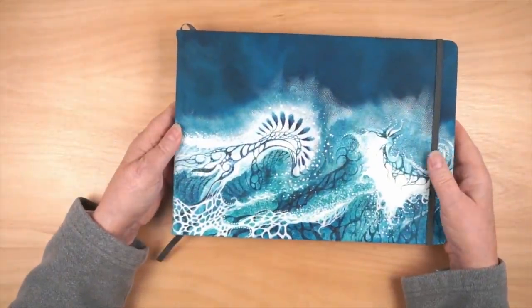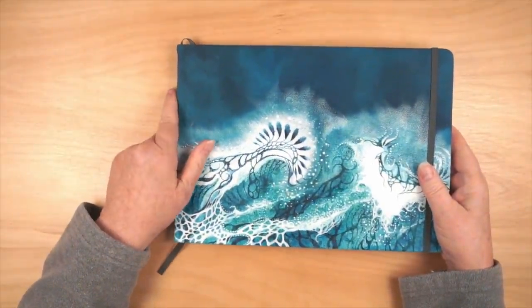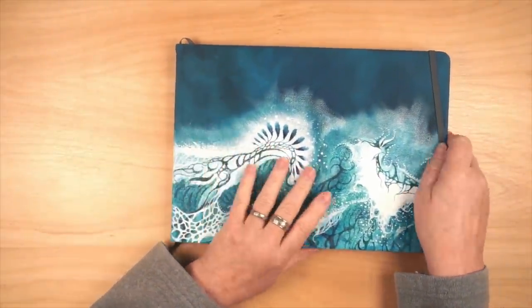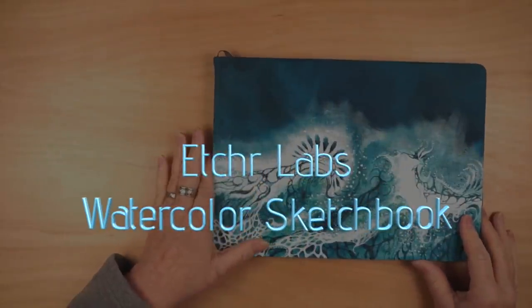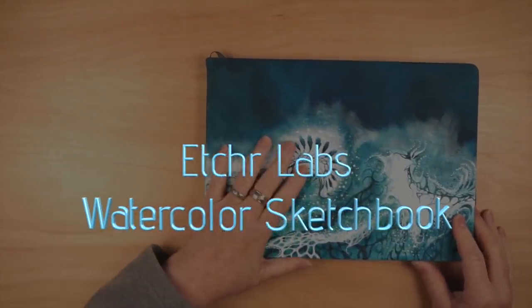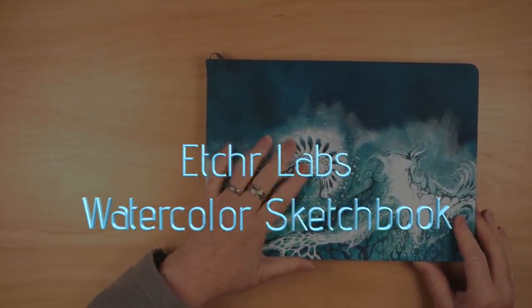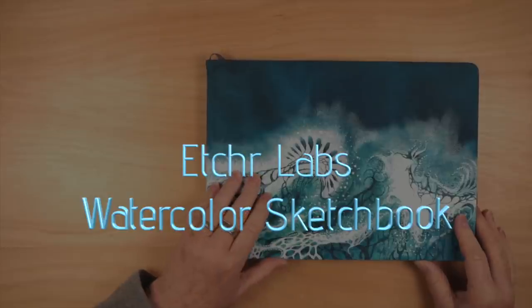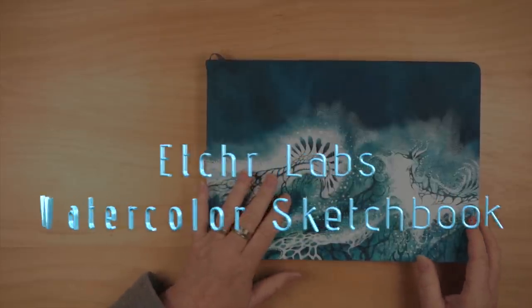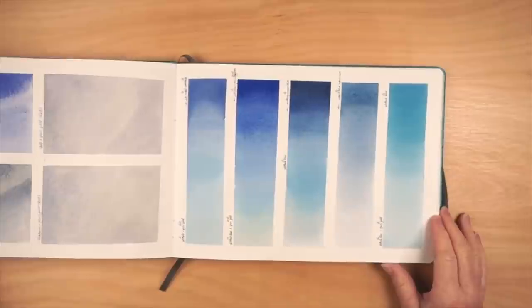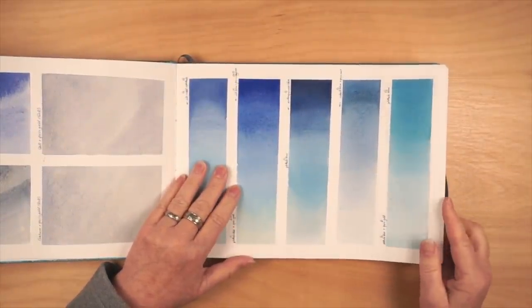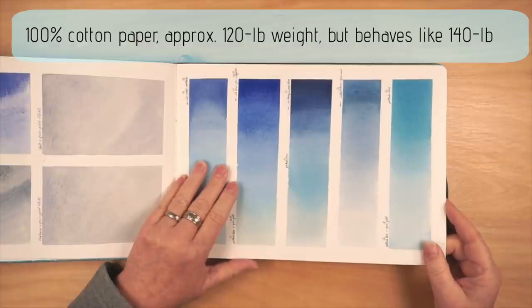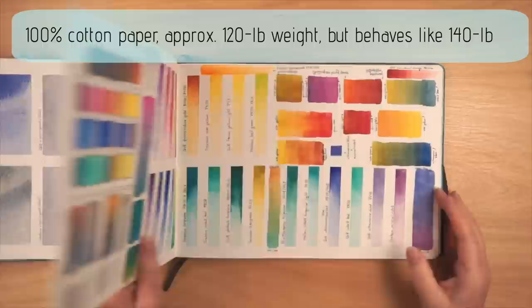Another possibility if you want a paper that is going to take a wash a little more like your studio paper is the Etcher Labs watercolor sketchbook. One of the fun things about this sketchbook series is that you can paint the covers with acrylic and kind of personalize them and make them your own. This paper takes watercolor very much like a regular professional-grade watercolor paper that you might be using in your studio. So I love it for that.